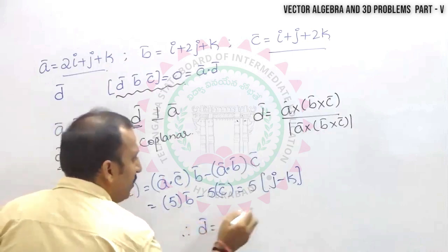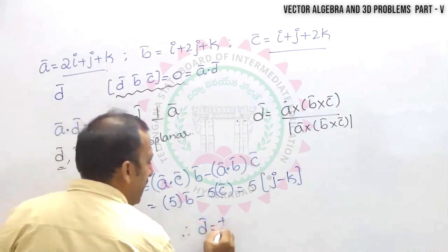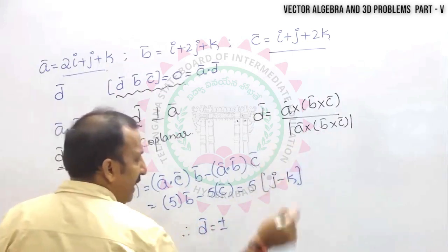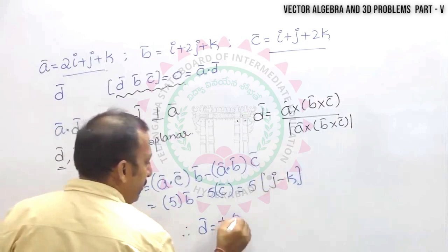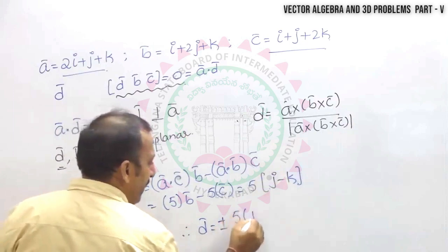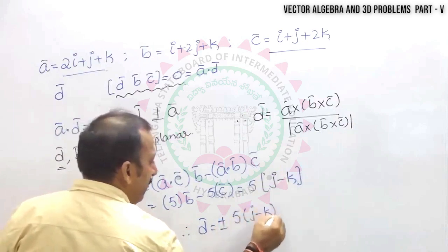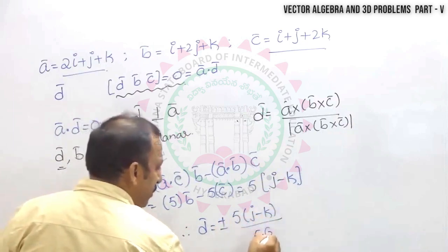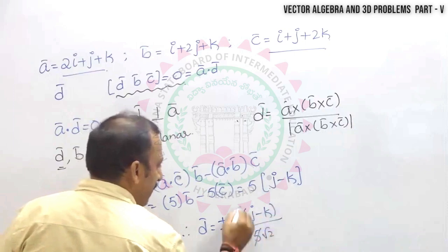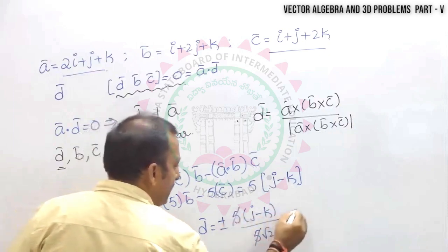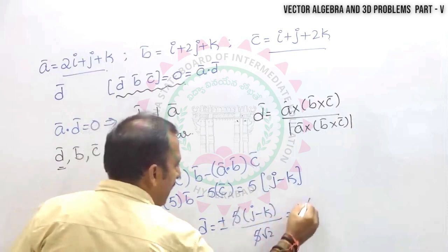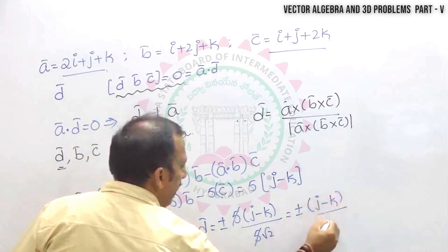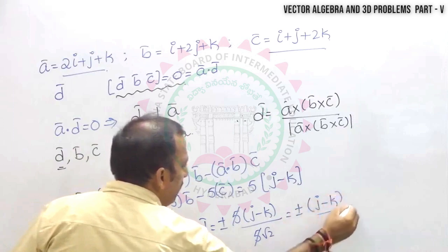d̅ = ±(a × (b × c)) / |a × (b × c)| = ±5(j̅ − k̅) / (5√2). The 5s cancel, giving d̅ = ±(j̅ − k̅) / √2.